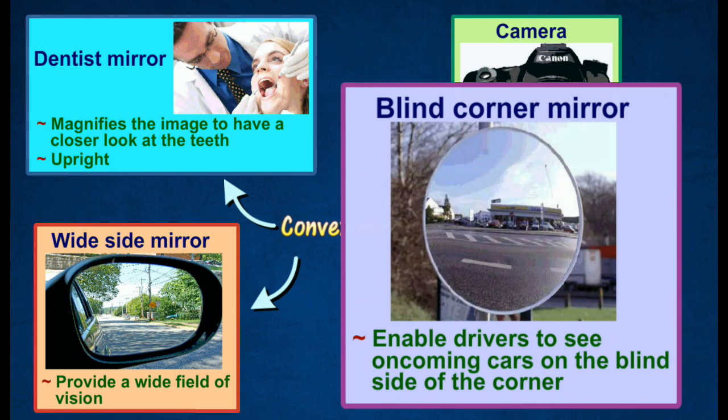Blind corner mirrors are usually placed at sharp corners to enable drivers to see oncoming cars on the blind side of the corner to avoid accidents.